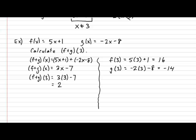And then we add those two results together. So f of 3 plus g of 3 gives us 16 plus negative 14, and that gives us a final result of 2. And there we have it, ladies and gentlemen. This is what is meant by performing operations between functions.